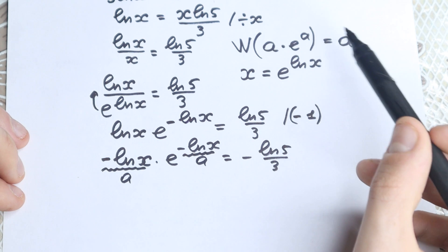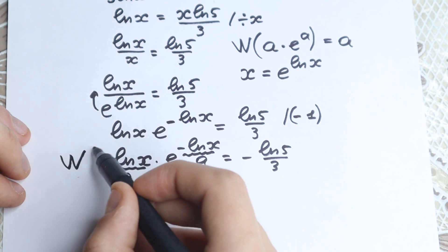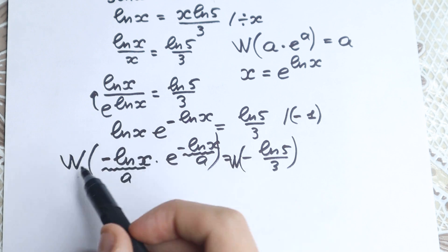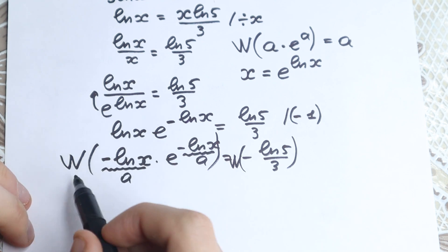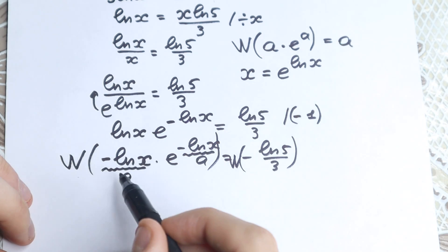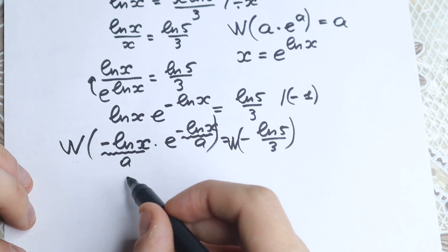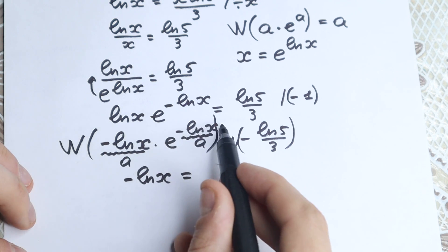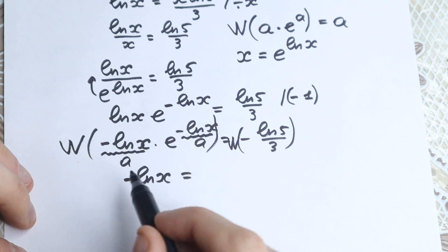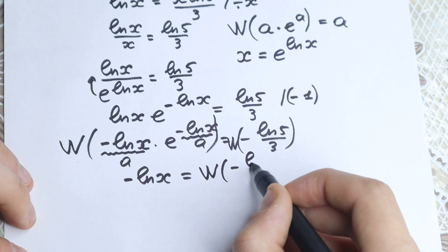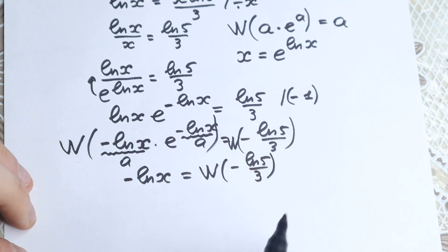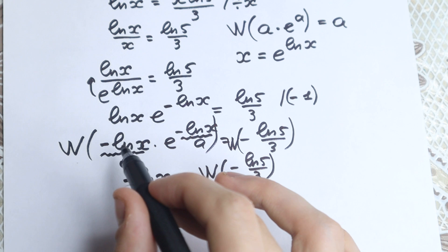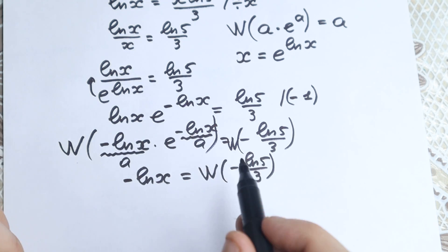Let's apply the Lambert W function on both sides — this is a very important moment. In math, what you do to one side you must do to the other. Applying W to the left-hand side gives us back our a, which is minus ln(x). So minus ln(x) equals W of minus ln(5)/3. This simplifies things a lot — we no longer have e or ln(x) on the right, just the Lambert W function applied to the constant minus ln(5)/3.